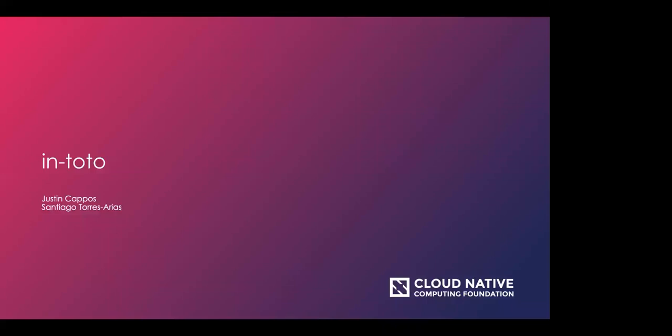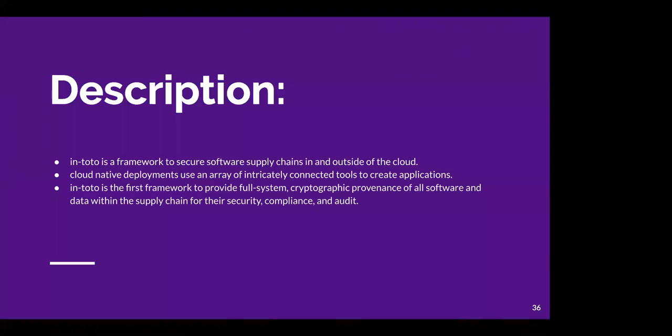I'm Santiago, and Justin is here with me. We're going to talk about the incubation application for In-toto. For those who are not familiar, In-toto is the first framework to secure software supply chains as a whole. It works in and outside of the cloud, but the cloud — with diverse environments, multi-tenant hosts, and different components working in loose connections — is probably what stress-tests this environment the most. In-toto allows you to create a policy that gives you security assurance, compliance checks, and a cryptographically verifiable audit trail.